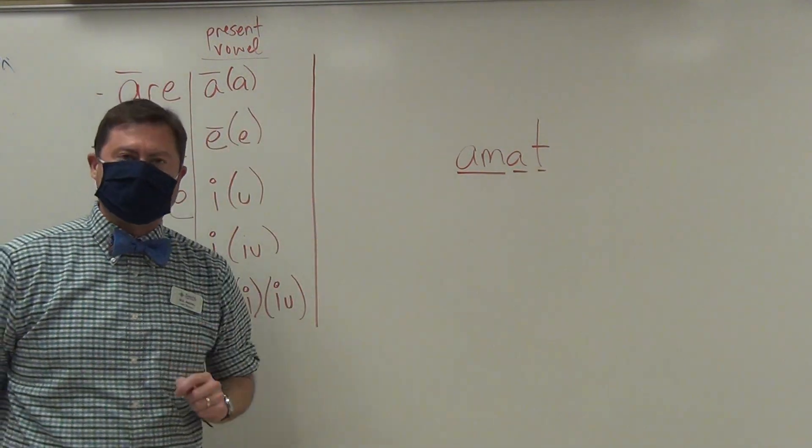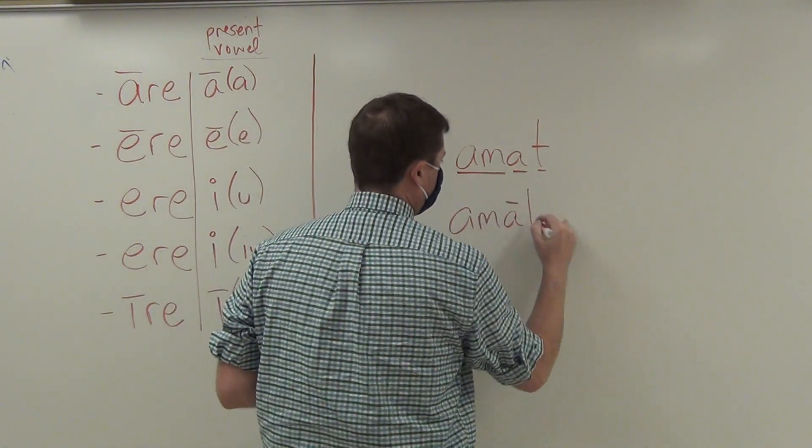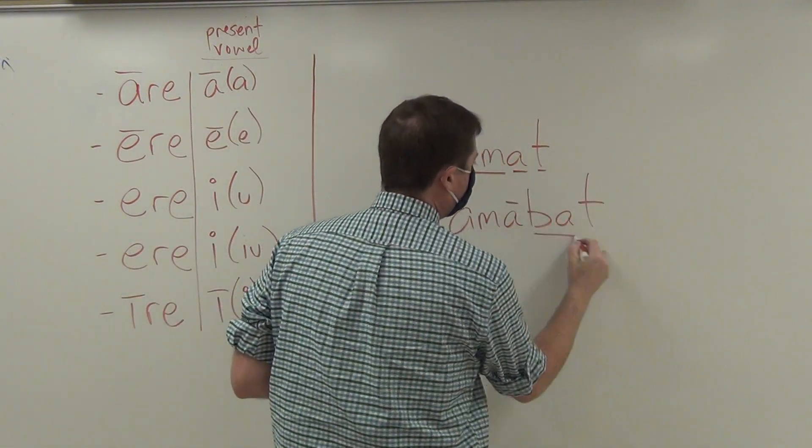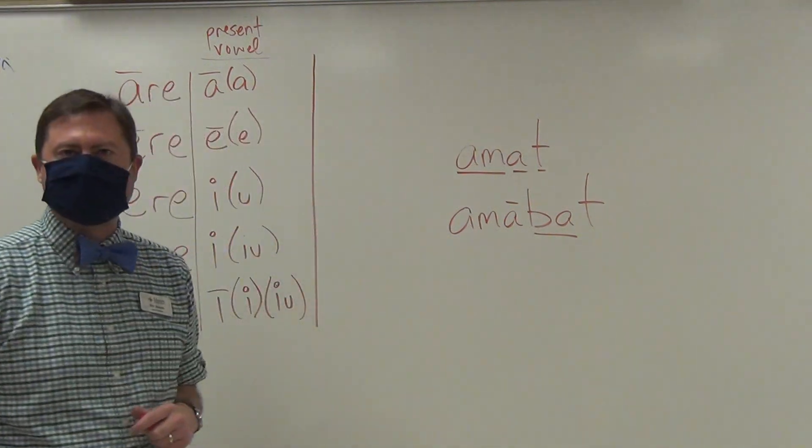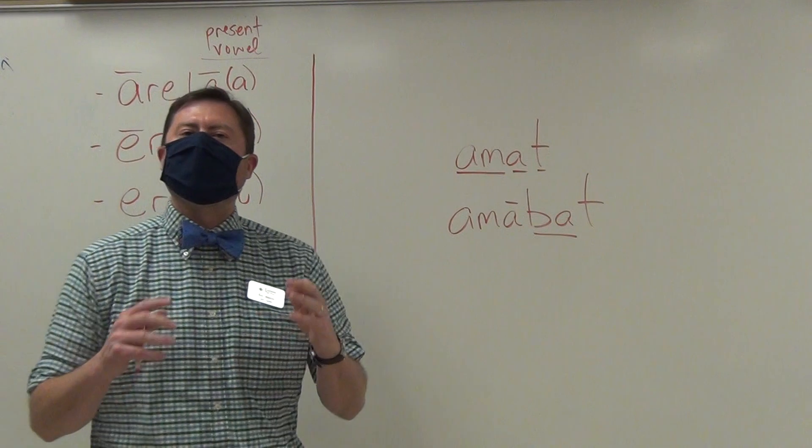Because it is a first conjugation, it has that A and then of course it has the T ending. The imperfect tense would look like the following. And there you can see that BA—the bot—that tells me that this action is an imperfect action.